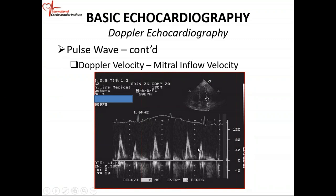Let's look at our mitral inflow. We have our apical four-chamber view with two-dimensional echo on top. This is the cursor, and the sample volume is right here. Your transducer is represented by this symbol. We press our pulse wave Doppler button. Blood flows from the left atrium across the mitral valve into the left ventricle in diastole, and that blood is flowing towards the transducer. That is why in diastole you have your E-velocity and then your A-velocity — this is the mitral inflow. The flow is above the baseline and occurs in diastole.